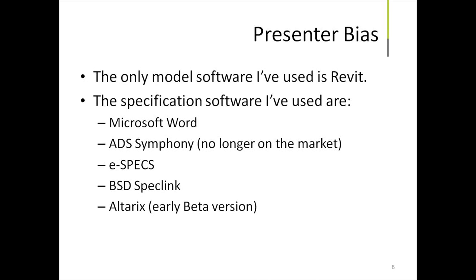Here's my presenter bias: the only model software I've used is Revit. For specification software, I've used quite a few of those on the market in the US — Microsoft Word, ADS Symphony, eSpecs, and an early beta version of UltraX. They say it's changed a lot since I used it, so we're curious to see how it's evolved.